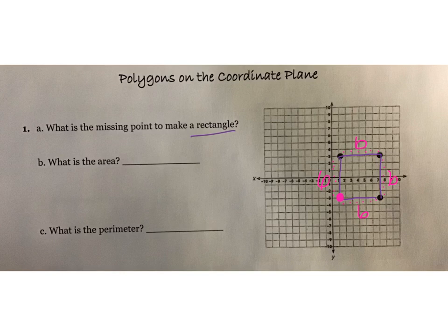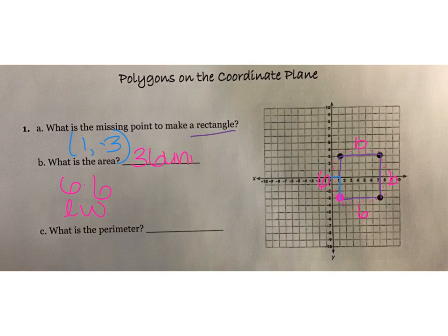We didn't want to say 'make a square' — we wanted you to figure that out. So the missing point: remember you're going to start at your origin, go on your x-axis, and then on your y. So this missing point is (1, negative 3). Then we find our area — length times width, which is 6 times 6. So our answer is 36 units squared. Then perimeter is all the way around the outside: 6 plus 6 plus 6 plus 6, all 4 sides, gives us 24 units.